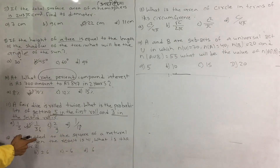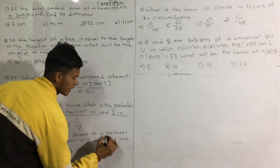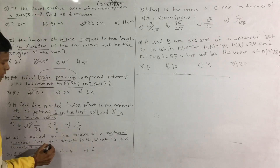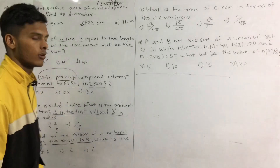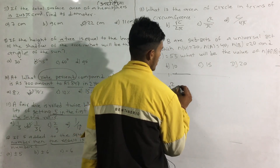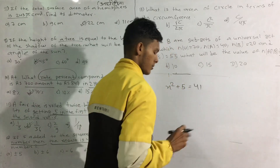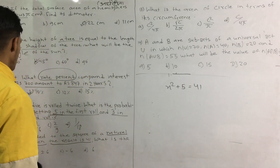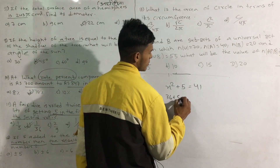If 5 is added to the square of a natural number, the result is 41. What is the number? If 5 is added, n squared plus 5 equals 41. The number squared equals 41 minus 5, which is 36. So n squared equals 36, which means n equals 6.